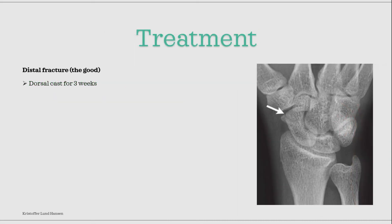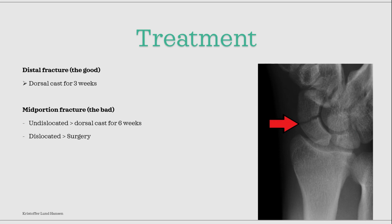Treatment varies based on the location of the fracture. For a fracture in the distal and thereby the best vascularized region, a cast is put on for three weeks. Even if a small fragment is a little bit dislocated, it is only treated by a cast in most cases. For a fracture in the mid-portion of the scaphoid, we divide it into undislocated and dislocated. An undislocated fracture is treated by a dorsal cast on the arm for six weeks — the same way as the distal fracture but longer. If it is dislocated, surgery is advised.